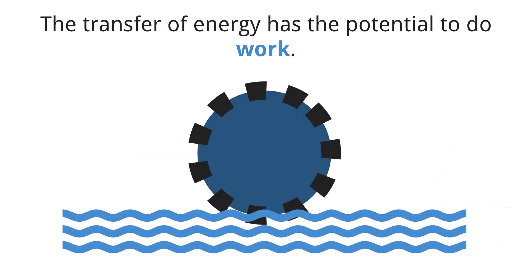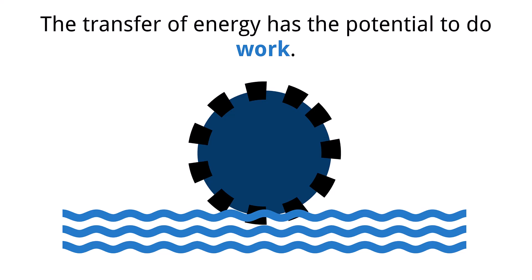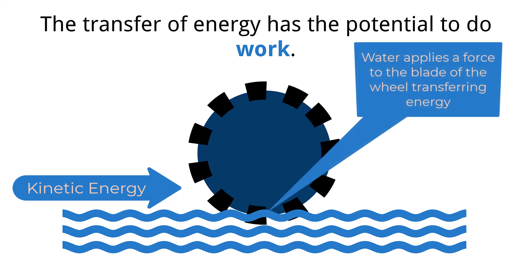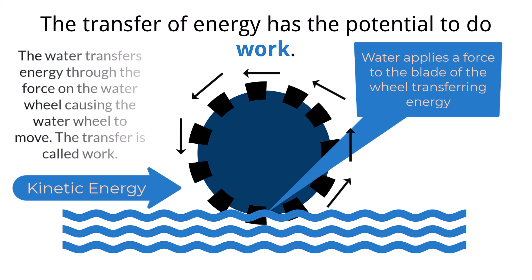When energy is transferred, it has the potential to do work. Work is the application of a force over a distance. Consider the movement of a waterwheel that is placed in a moving river. The water has kinetic energy, and as it moves it makes contact with the blades of the waterwheel. That contact applies a force over a distance to the blade, thus causing the blade to move, causing the blade to gain kinetic energy. This force applied to the blade by the water is the work done on the blade by the water. It is also how much energy that has been transferred to the blade.